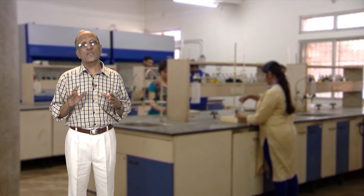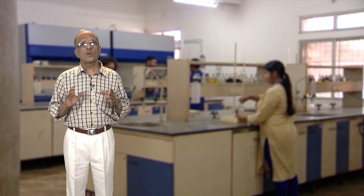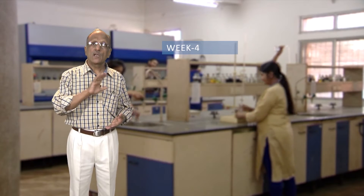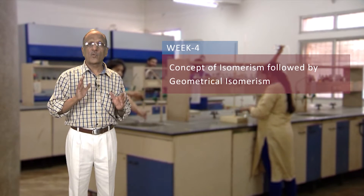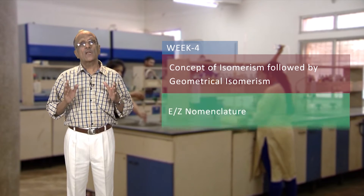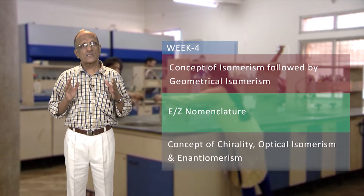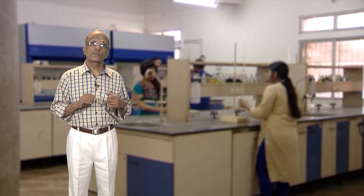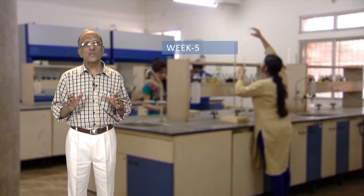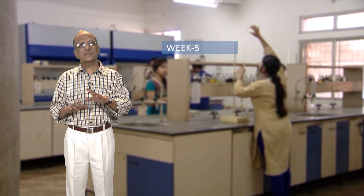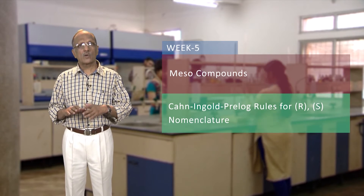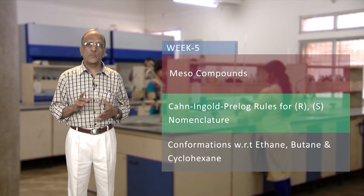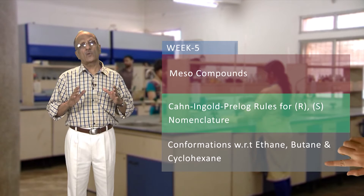In the fourth and fifth weeks, we will cover main topics related to stereochemistry. In the fourth week, we will begin with concepts of isomerism followed by geometrical isomerism, their E/Z nomenclature, concept of chirality, optical isomerism, and enantiomerism. In the fifth week, we will continue with stereochemistry by discussing meso compounds, Cahn–Ingold–Prelog rules for R/S nomenclature, and conformations with respect to ethane, butane, and cyclohexane molecules.